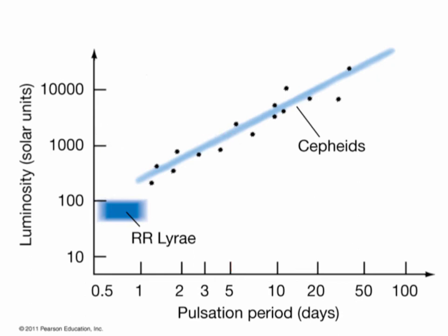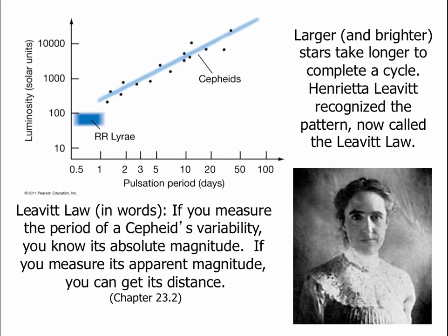Now if we know how luminous the star is and we can tell how bright it appears in our sky, we can determine the distance — because how bright something appears depends on both how luminous it is and how far away it is. If we know how bright it appears and how luminous it is, we can determine how far away it is. So these Cepheid variable stars are extremely important for finding distances to other objects if we can find a Cepheid star in that object. In summary: if you measure the period of the Cepheid's variability, we know its absolute magnitude or luminosity, and if we can measure its apparent magnitude we can use the absolute and apparent magnitude to get the distance to the star.